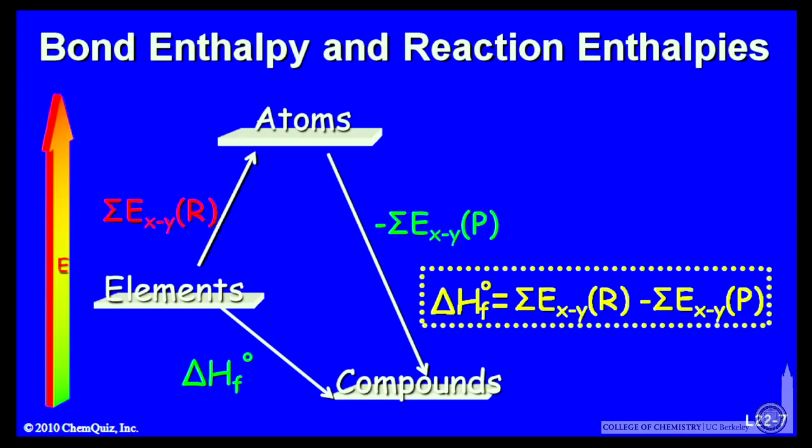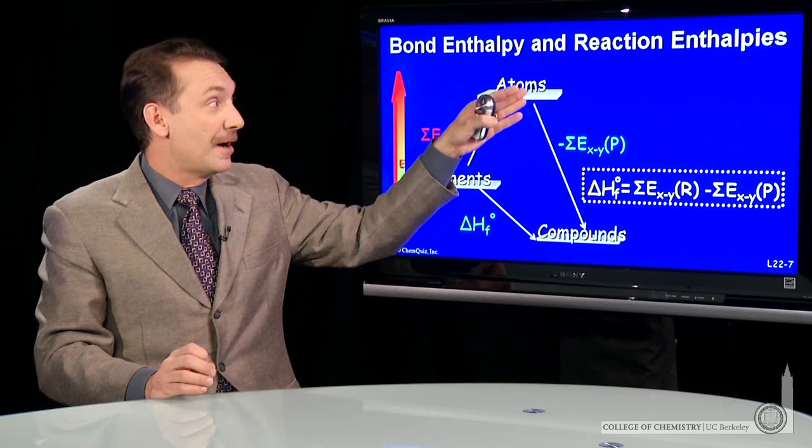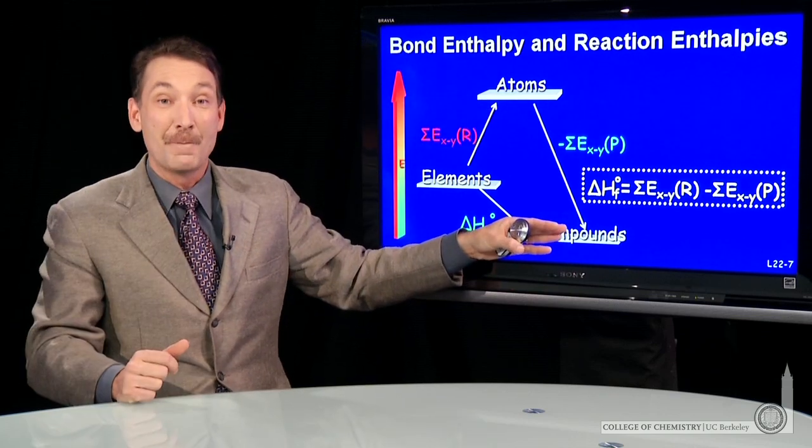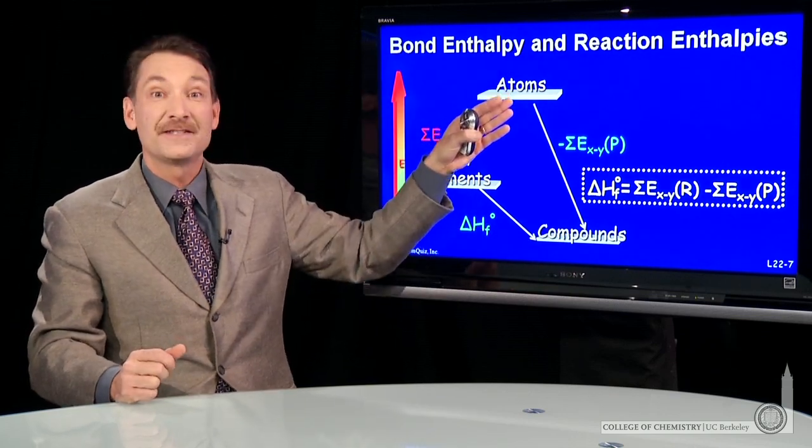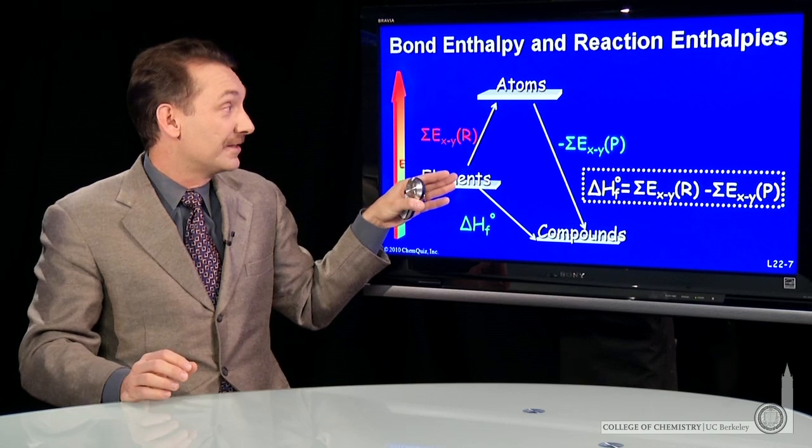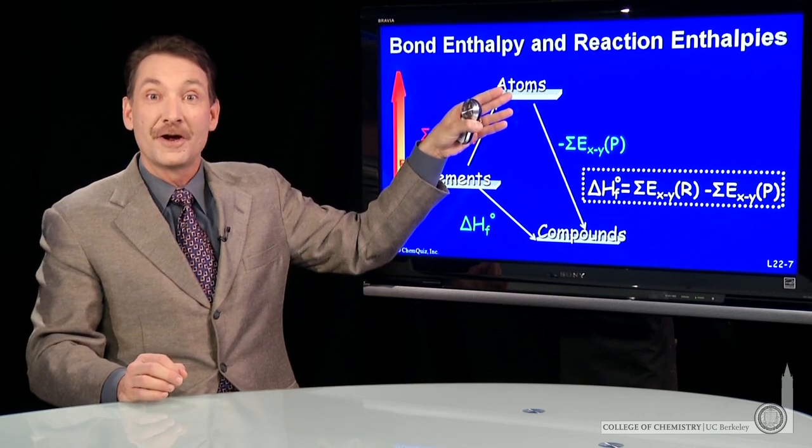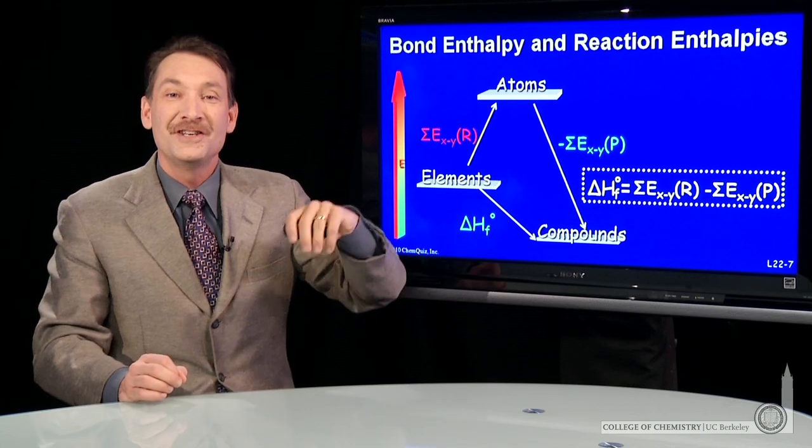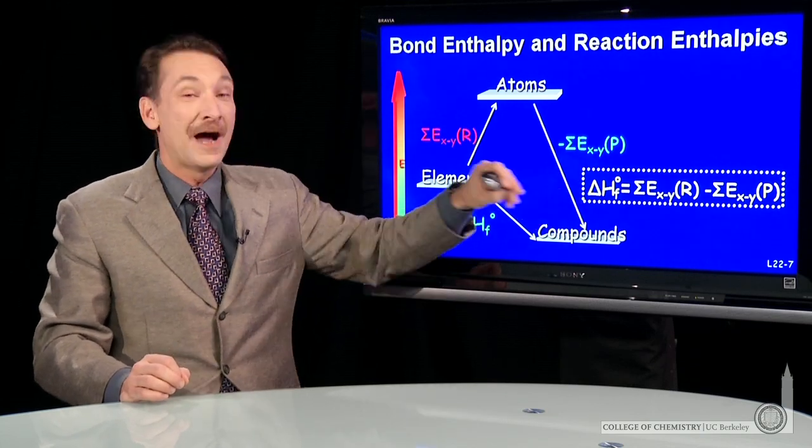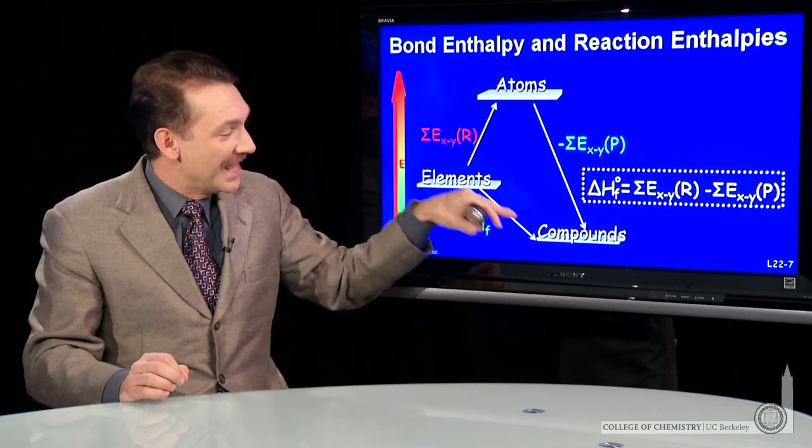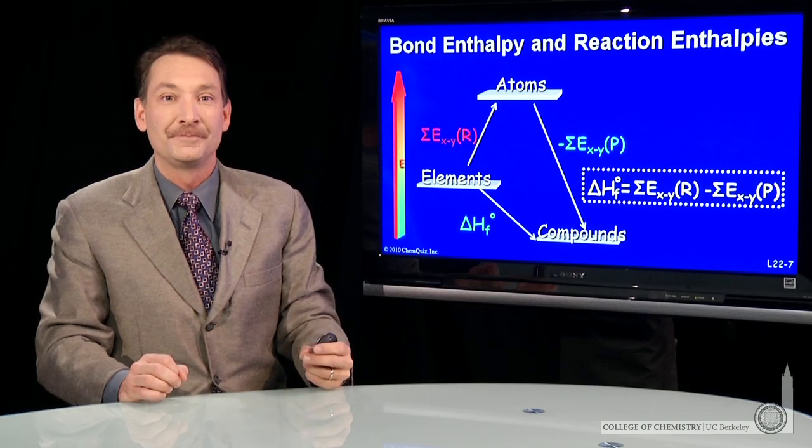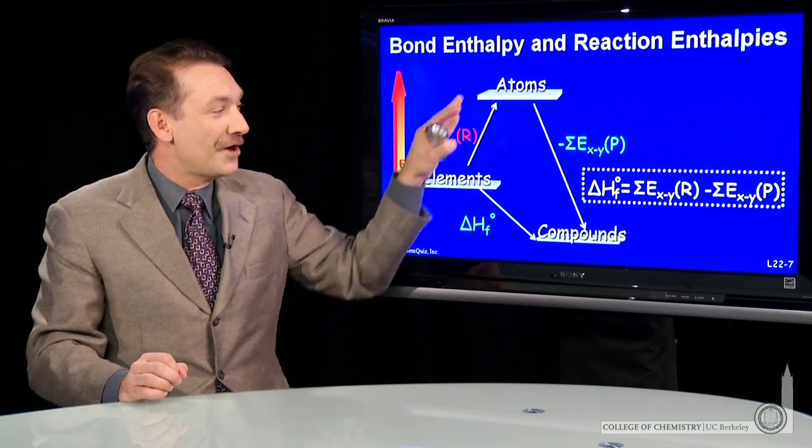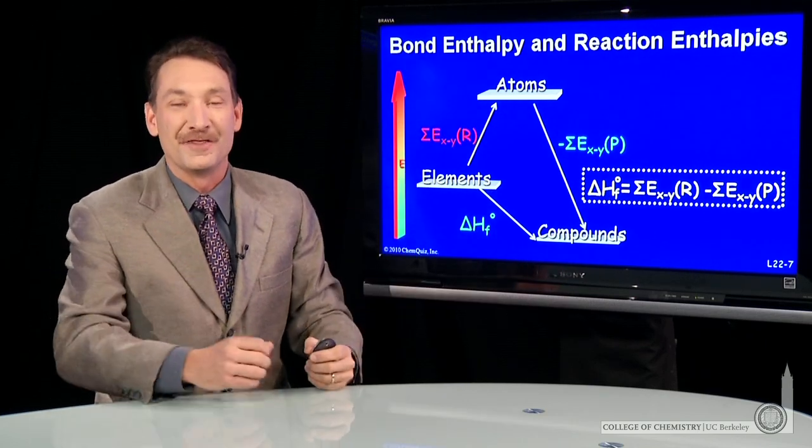So this is a handy way using a path that we kind of imagine in our mind, but one that's eminently calculatable. That is, look at all the bonds, figure out how much energy it takes to break them, look at all the bonds that are formed, figure out how much energy that is, and just do the math, simply accounting to keep track of the enthalpy of a chemical reaction. So that's the power of understanding bond enthalpies.